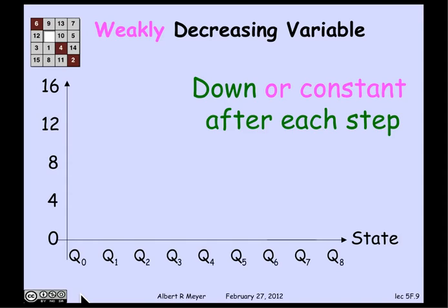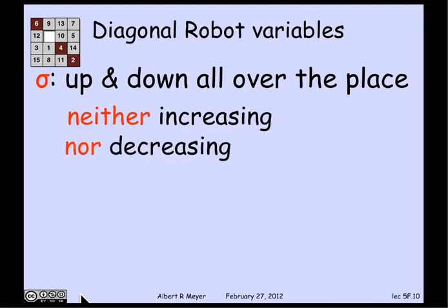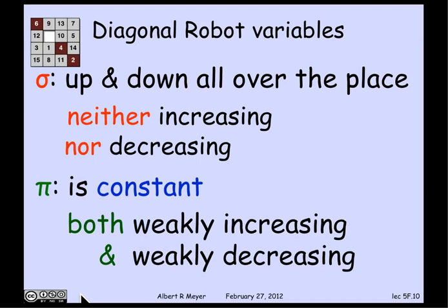A related idea is a weakly decreasing variable. These are not necessarily useful for proving termination, but they are often useful for analyzing the behavior of an algorithm. A weakly decreasing variable is one that goes down or stays constant — it never gets larger. For example, sigma, the sum of the coordinates, is up and down all over the place — neither increasing nor decreasing. The parity variable pi, which is 0 or 1 according to whether the sum of coordinates is even or odd, is a constant, meaning it's both weakly increasing and weakly decreasing. In fact, something is weakly increasing and weakly decreasing if and only if it's a constant.